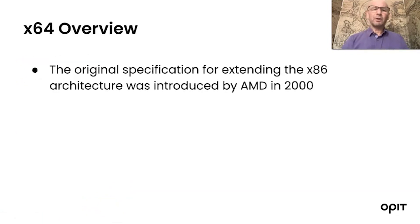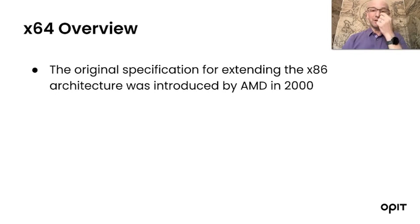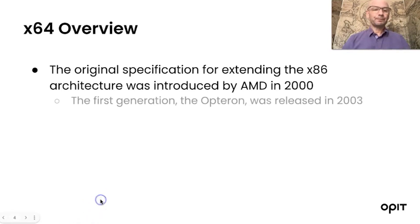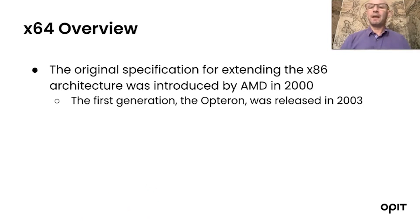The original specification for extending the x86 architecture was introduced by AMD in 2000. The big players in the development of the x86 architecture were first Intel, shortly followed by AMD — those two big players over roughly the last 20 to 30 years. The first generation processor was called the Opteron, released by AMD in 2003.